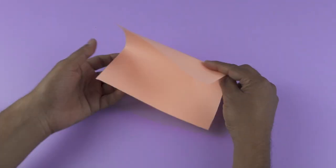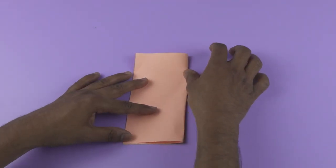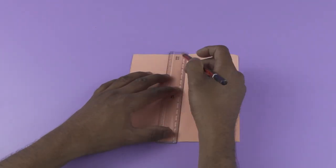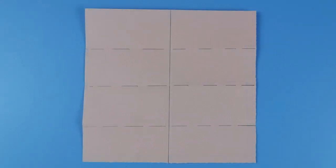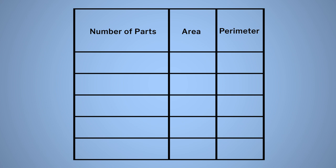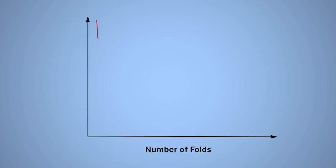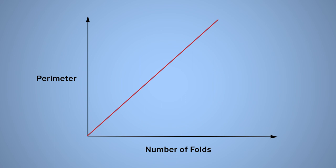Variation is used to describe the relationship between two quantities. But is there any relationship between direct and inverse variation? For that, let us do one activity. Take a square paper sheet, measure the length, and find out the area and its perimeter. Fold the paper, measure the length, and find out the area and perimeter again in each square. Repeat this 4 to 5 times. Make a table to record the observations and show the graph of the relationship in each pair of number of folds, area, and perimeter.